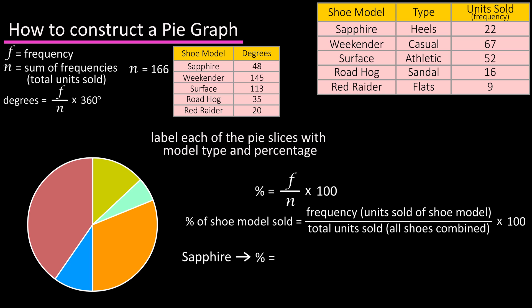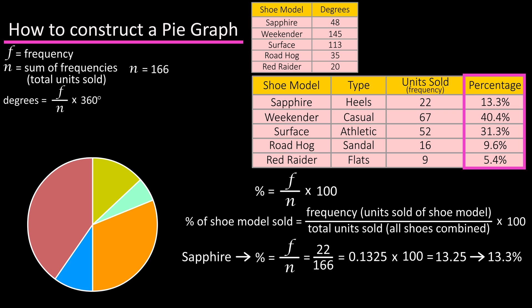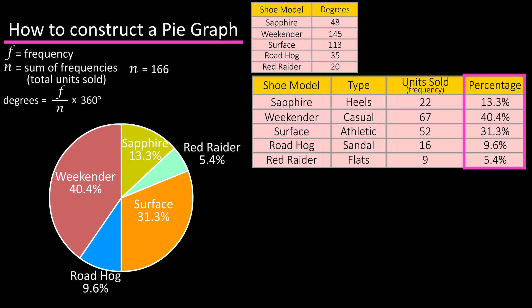So for the sapphire shoe, we have 22 divided by 166, which equals 0.1325 times 100 equals 13.25, which we can round off to 13.3. We would continue this process for the remaining shoes as you see here in the table, and then put these into the pie graph to finish it off.